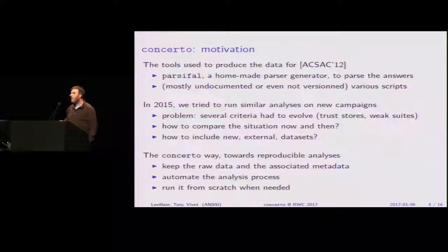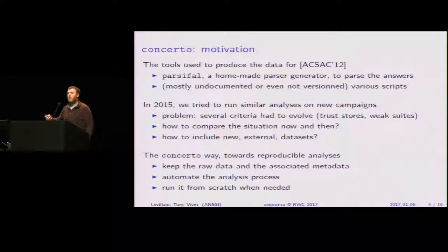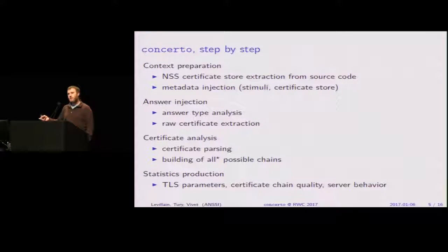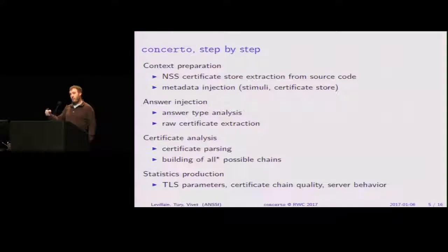We also wanted to include new external datasets like those available from scans.io. So the way we built Concerto is to go back from the raw data and associated metadata — like the client hello used — and automate the entire process. The process involves preparing the context by injecting the stimulus used and the certificate trust store to determine which hosts are considered trusted. We used NSS in our examples. Then we inject the answers, parse them, extract certificates, build all possible chains from the certificate messages, and finally produce statistics.